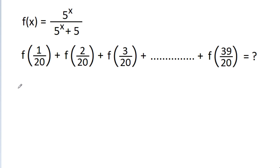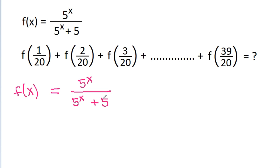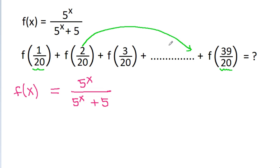We are given that f(x) = 5^x / (5^x + 5), and we can note that 1/20 + 39/20 = 40/20 = 2, and 2/20 + 38/20 is also equal to 2.